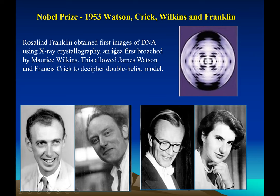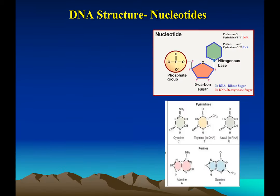The Nobel Prize was offered, but Rosalind Franklin had already died by then, and the Nobel Prize is not awarded posthumously. Now let's revise the structure of DNA. DNA is a polymer; the monomer is called a nucleotide. A nucleotide is made up of a phosphate group, a five-carbon sugar that is missing an oxygen — that's why it's called deoxyribose — and a nitrogenous base, which is rich in nitrogen. There are two types: purines are double-ring structures.